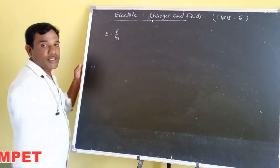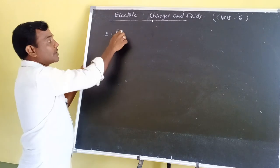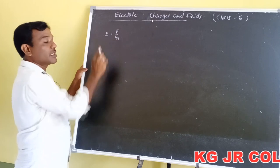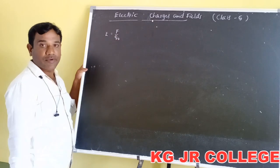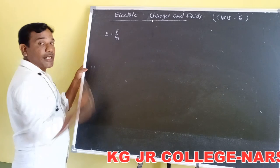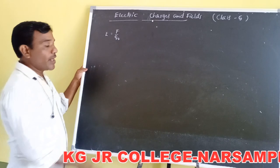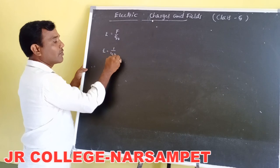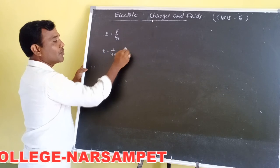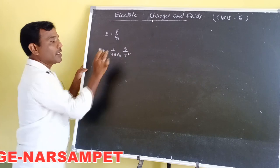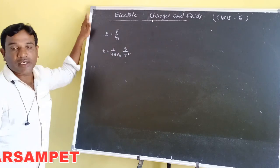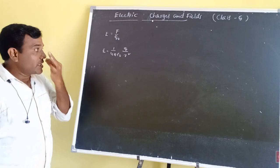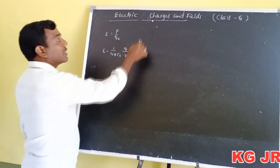The intensity of electric field is the force experienced by a unit positive test charge. The intensity of electric field due to a point charge is given by E = (1/4πε₀) × (Q/r²). Now we are discussing electric flux.